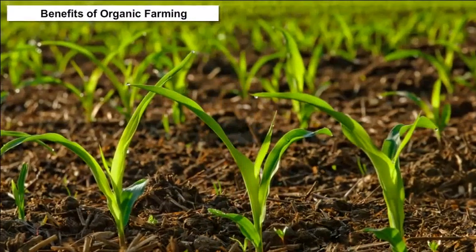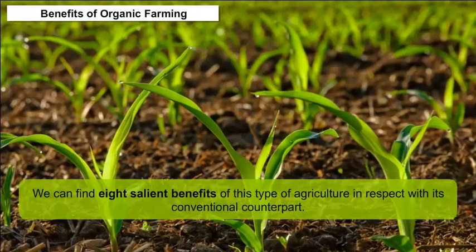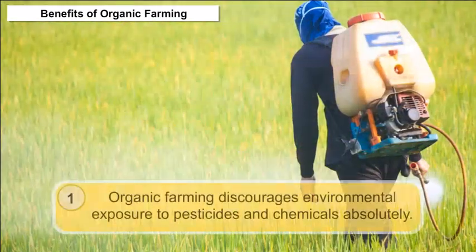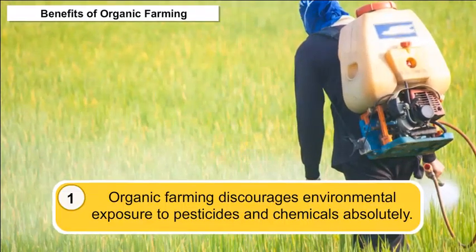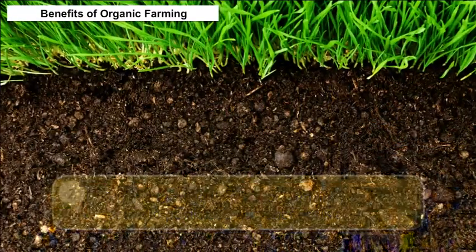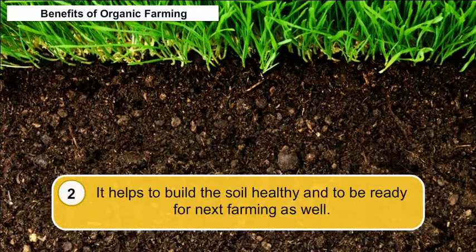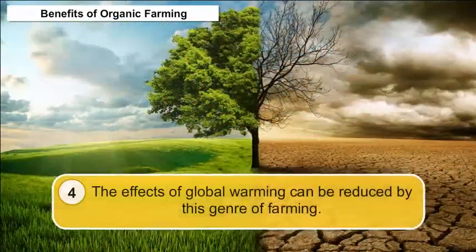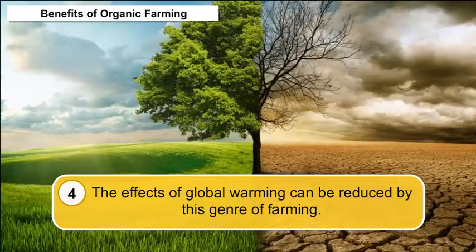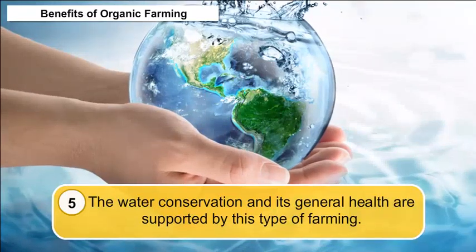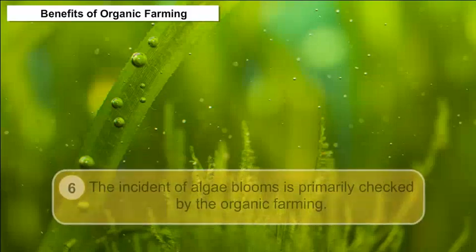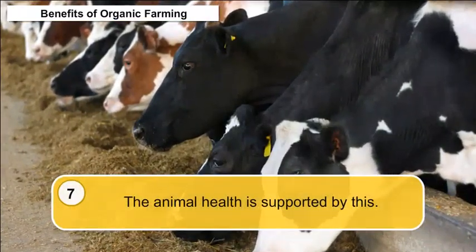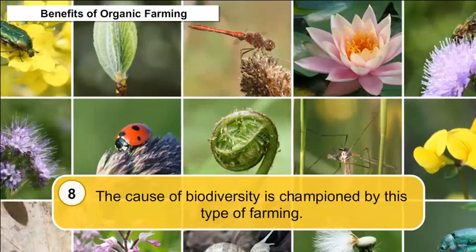As modern life sciences develop, we can find 8 salient benefits of organic farming compared to its conventional counterpart: it discourages environmental exposure to pesticides and chemicals; it helps to build healthy soil ready for future farming; soil erosion can be checked; effects of global warming can be reduced; water conservation and its general health are supported; incidents of algae blooms are checked; animal health is supported; and the cause of biodiversity is championed.